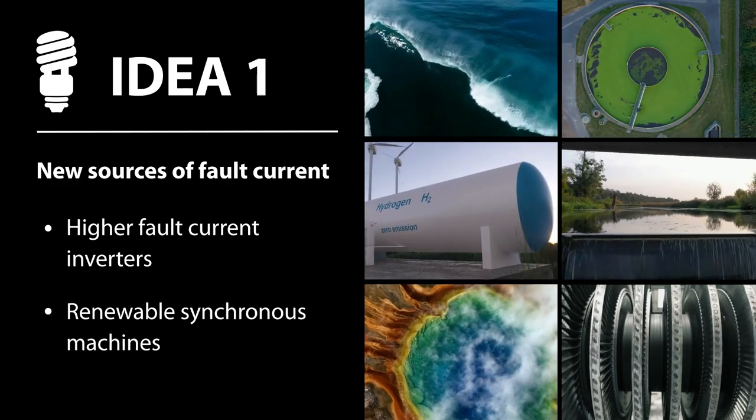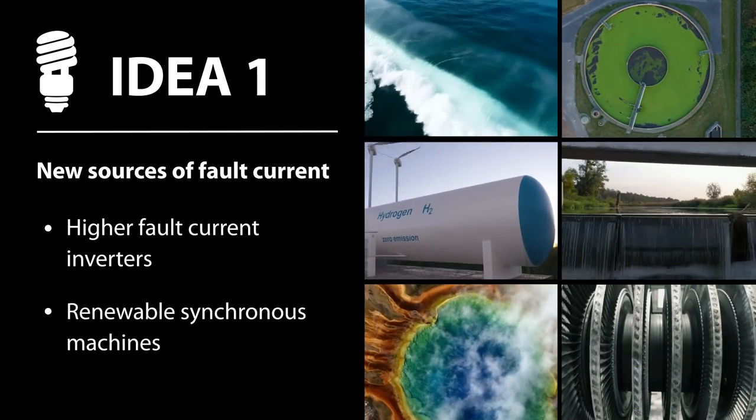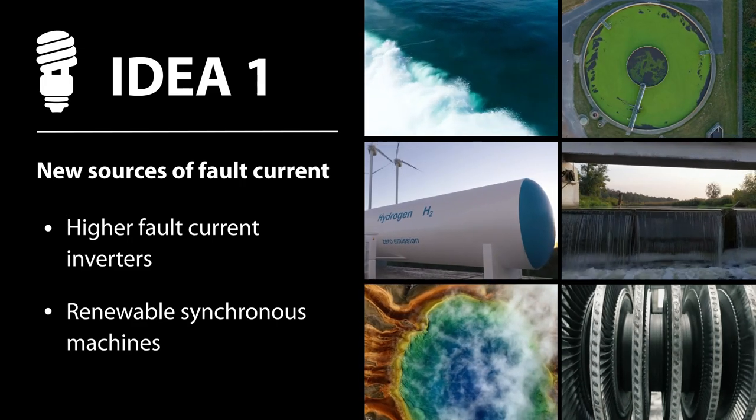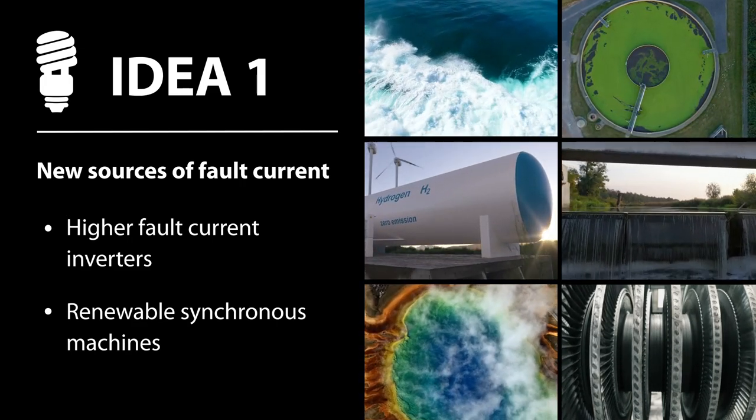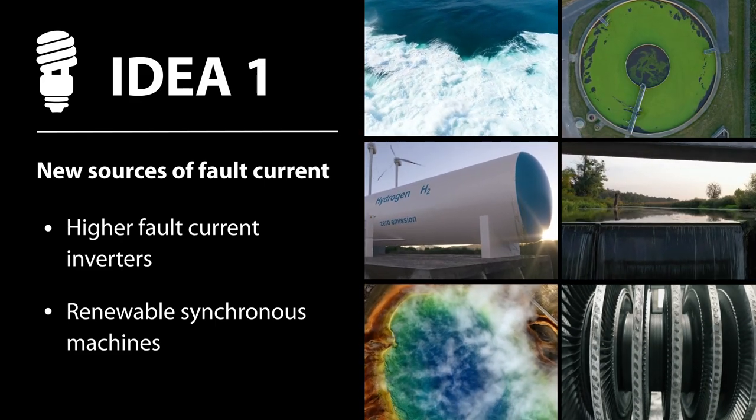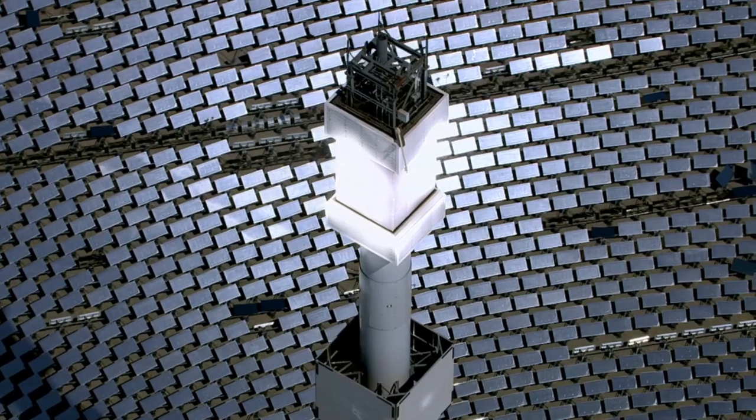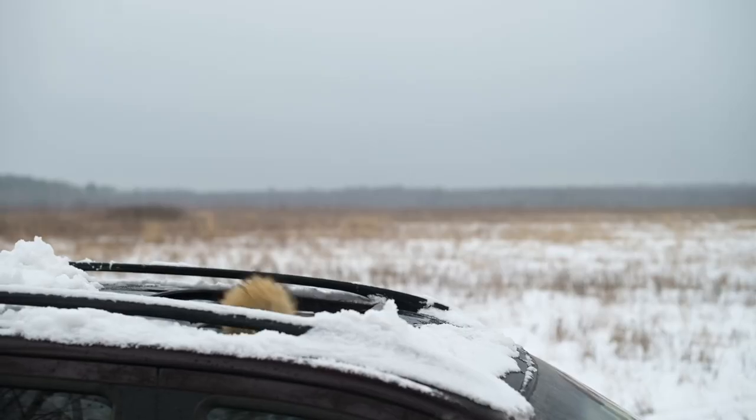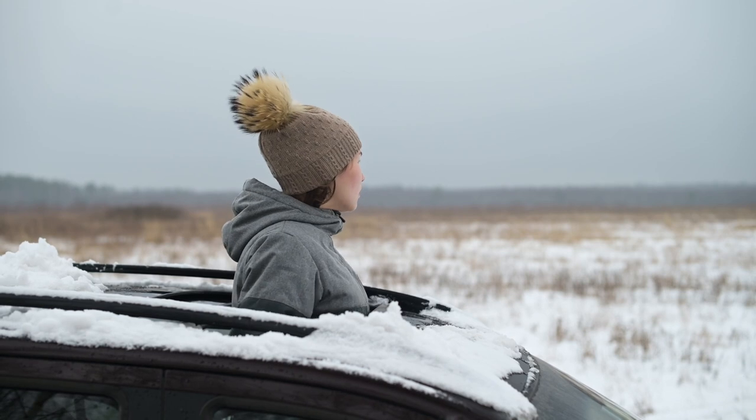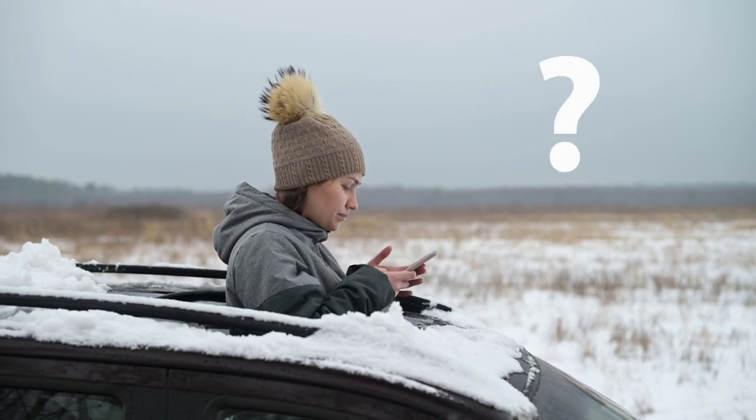Another is to continue to rely on synchronous machines that automatically inject fault current, just not the fossil-fueled ones. This could mean adding more renewable resources that use synchronous generators, including hydro, geothermal, concentrating solar power, and biofueled power plants. But these renewable resources may not exist in all the locations where we need fault protection.